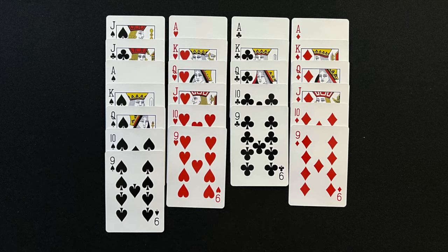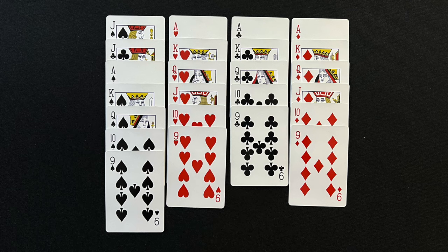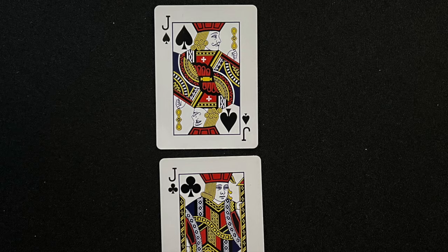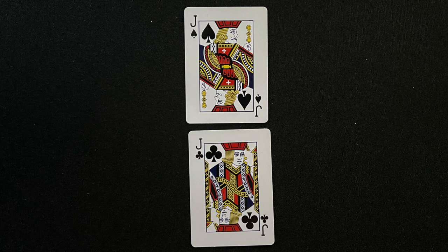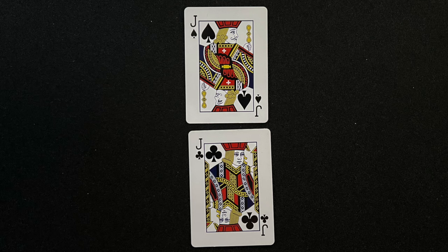For example, let's say that Spades is the Trump Suit for this round. The Jack of Spades becomes the highest ranking Trump Suit and the Jack of Clubs becomes the second highest ranking Trump Suit. These two cards are known as the right bower and the left bower. The right bower being the Jack of Trump Suit, the left bower being the Jack with the suit of the same color as the Trump Suit.